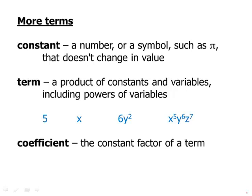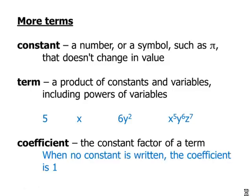The coefficient is the constant factor of a term. So for example, 6y squared. The variable y squared is being multiplied by the number 6. So 6 is the coefficient. Now if we look at x, just x by itself, you might think, well gee, that has no coefficient. And this is subtle. When no coefficient is written, the coefficient is 1.